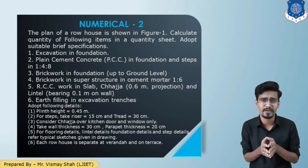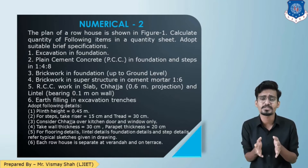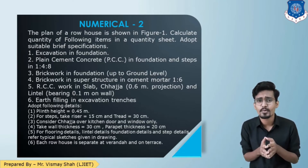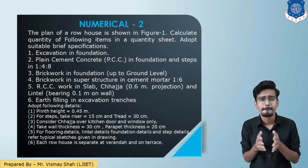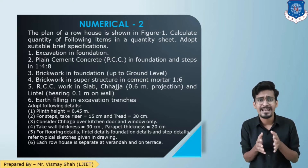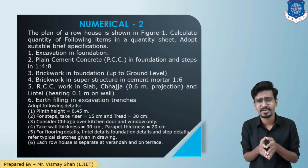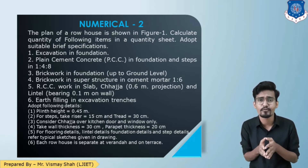Now let us look at the question. The plan of a row house is given in the figure; calculate the quantities in the measurement sheet and adopt suitable specifications. The quantities required are: excavation in foundation, PCC in foundation, brick work in foundation, brick work in superstructure, RCC work for slab, chajja and lintel, and earth filling in excavation. The plinth height given is 0.45 meter.